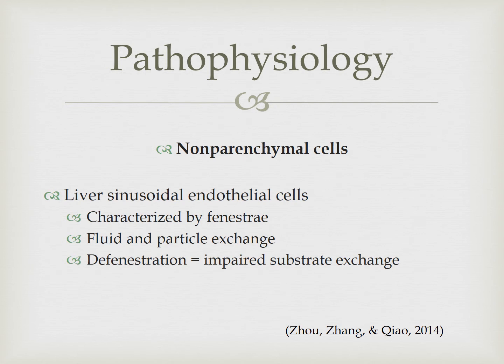The third non-parenchymal cell is the liver sinusoidal epithelial cells, characterized by fenestrae — little pores that facilitate the exchange of fluids and particles between the sinusoidal blood and the parenchymal cells. Chronic alcohol abuse can decrease the number of fenestrae on these cells, and this process of defenestration leads to impaired substrate exchange and hepatic dysfunction seen in liver cirrhosis.